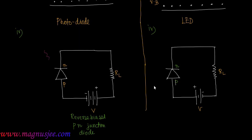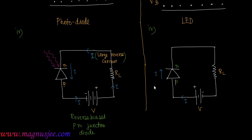For the photodiode, when light is incident on the reverse biased p-n junction diode, a reverse current flows from the N-region to the P-region — this is a large reverse current in the presence of light. For the LED, a forward current flows from the P-side to the N-side, and this forward current is large.